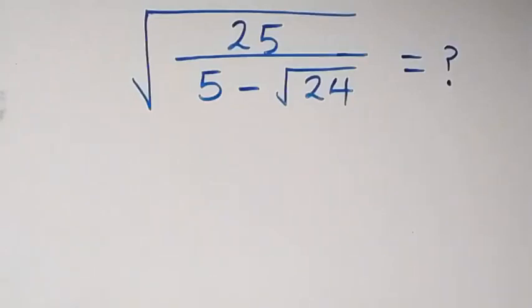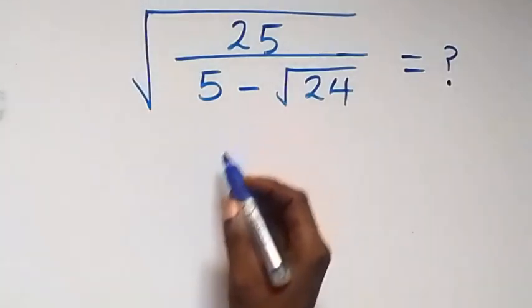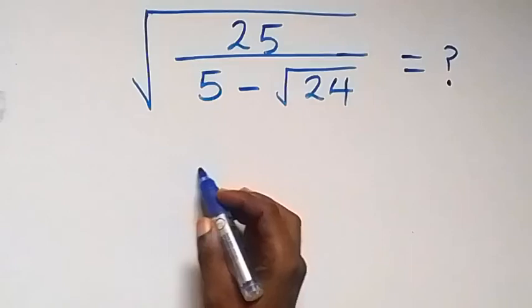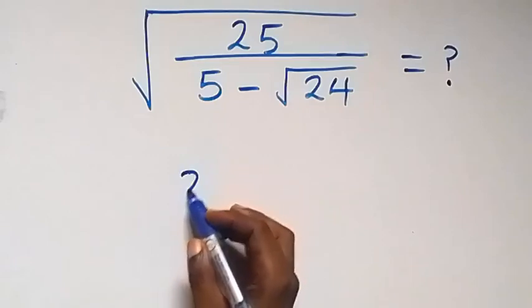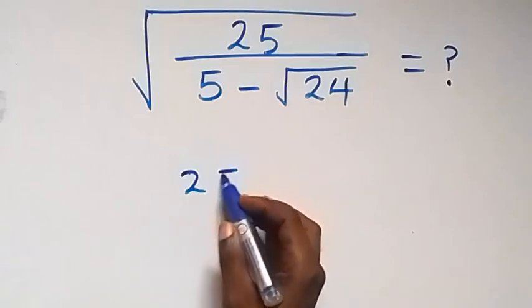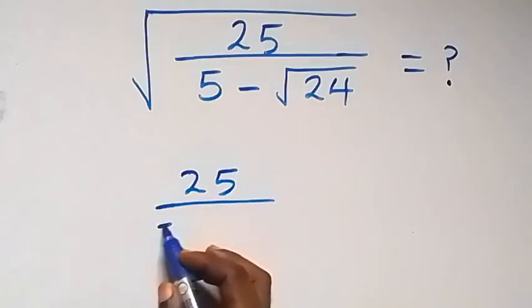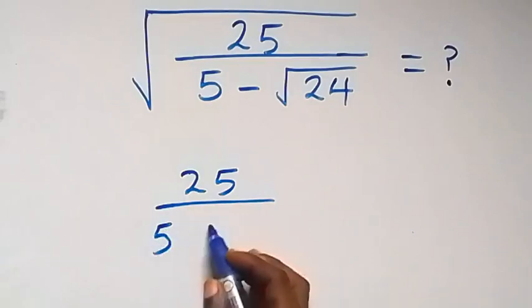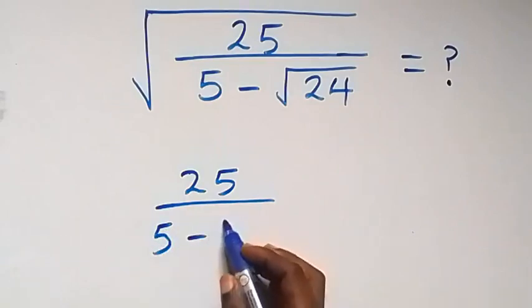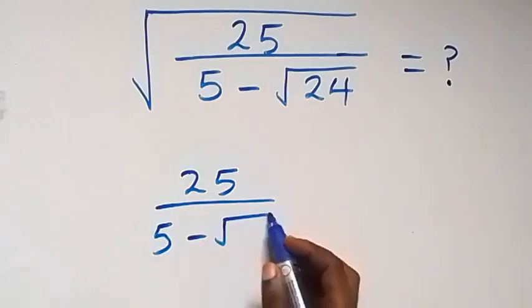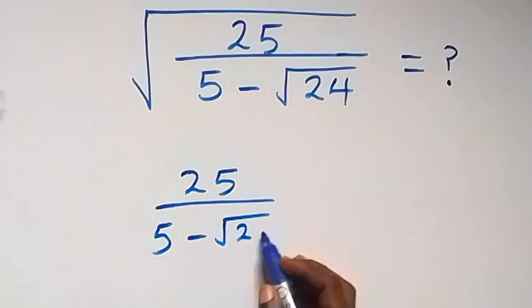Hello, you are welcome. How to solve this nice math problem involving square roots. What we have inside is 25 over 5 minus root 24.